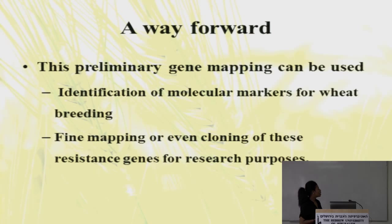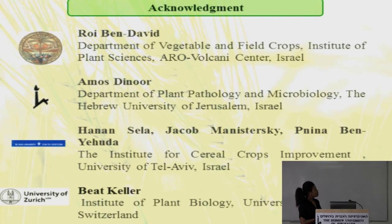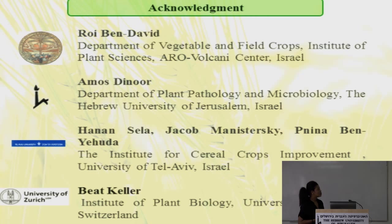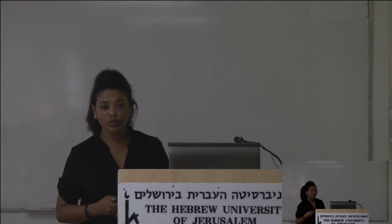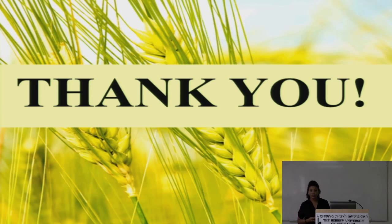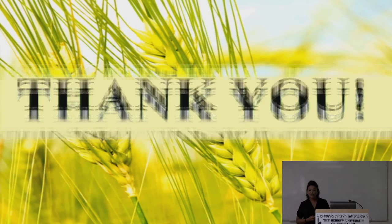We conclude that recombinant inbred lines showed segregating responses for both powdery mildew and yellow rust. Resistance against yellow rust isolate 5006 could result from the YR1 gene. There was no association between LR34 and yellow rust resistance. Future work includes identification of molecular markers, cloning, and fine mapping. I extend my gratitude to my mentors Dr. Roy Ben-David and Professor Amos Dinor, and collaborators at Tel Aviv University and the University of Zurich. Thank you.